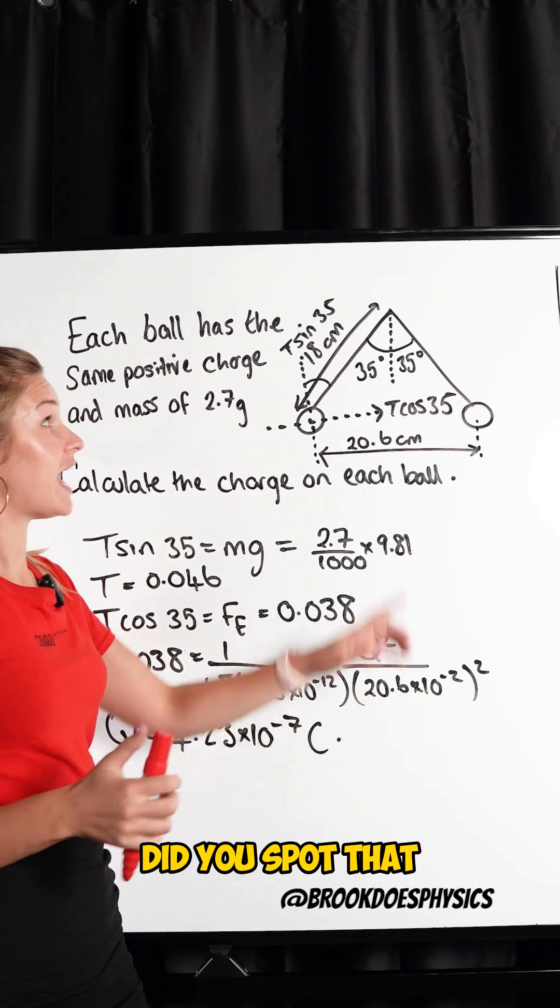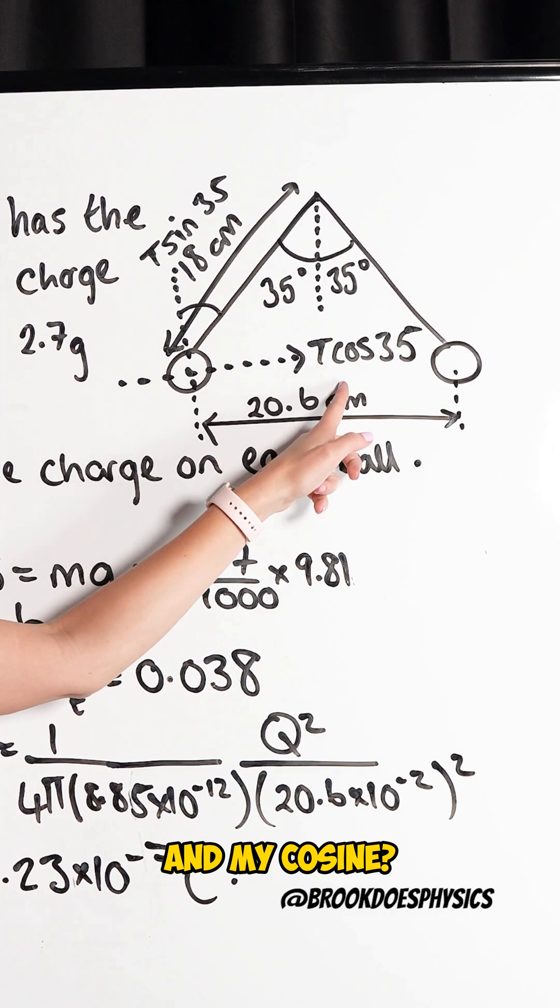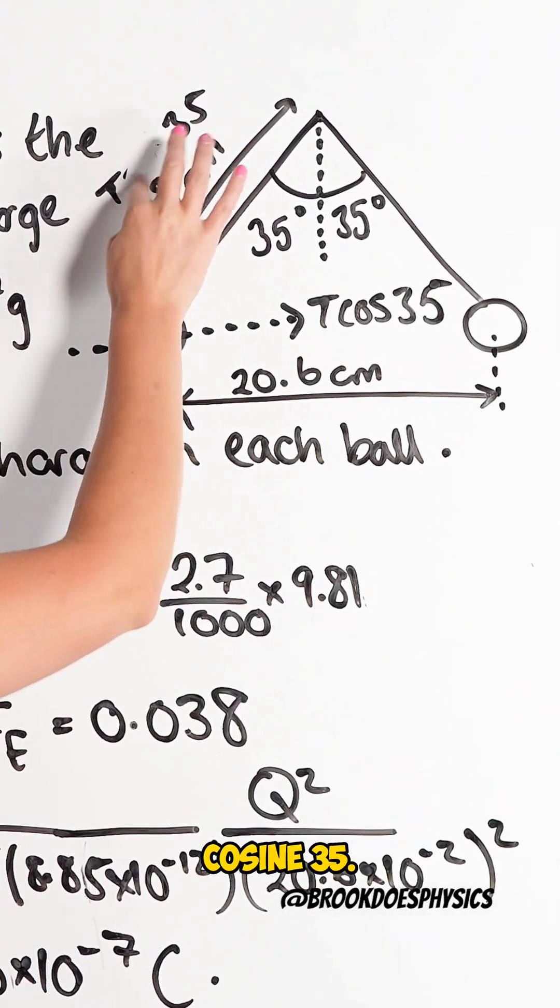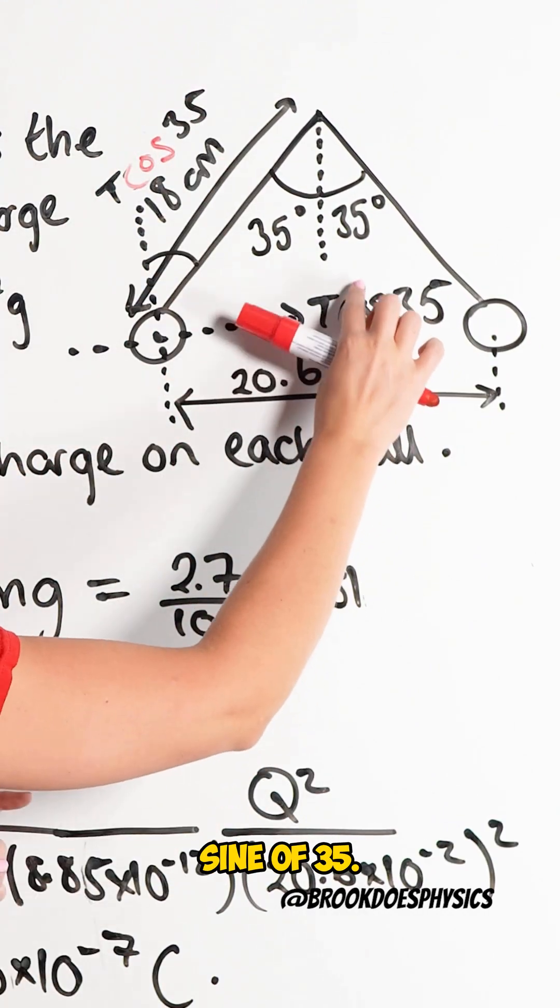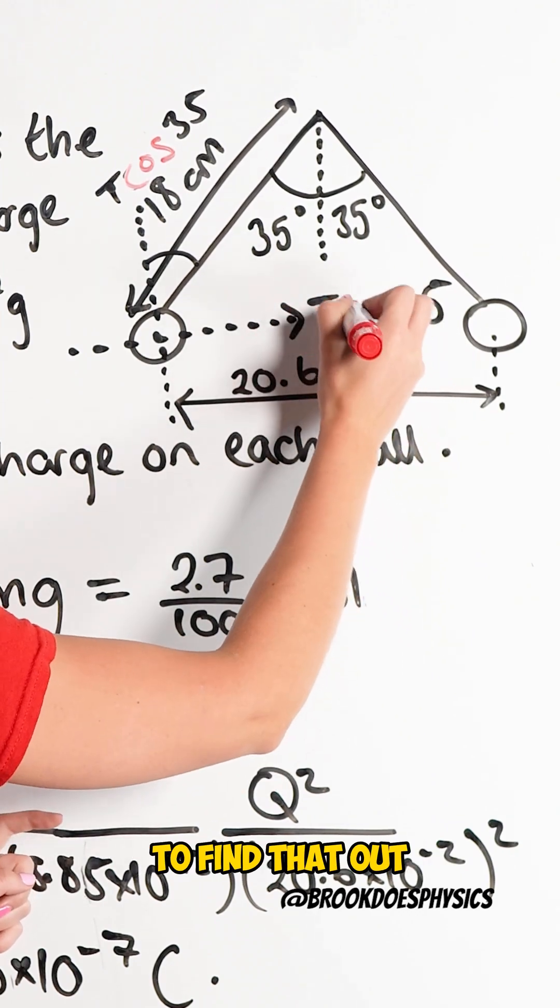Did you spot that I messed up my sine and my cosine? So here that should have been T cosine 35. And here that should have been T sine of 35. And you could have used trigonometry to find that out.